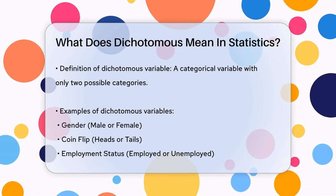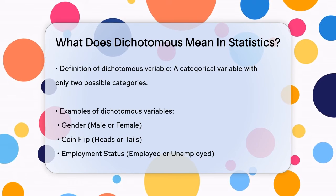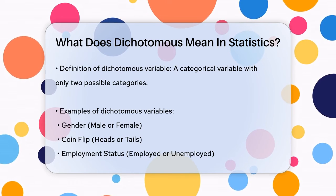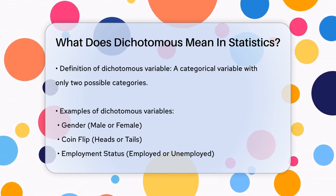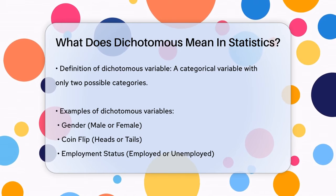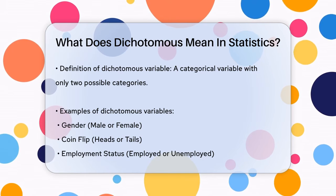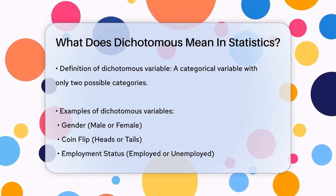In statistics, a dichotomous variable is a type of categorical variable that has only two possible categories or levels. Think of it like a simple yes or no question.